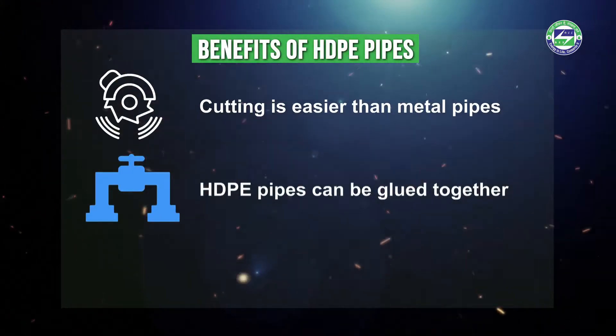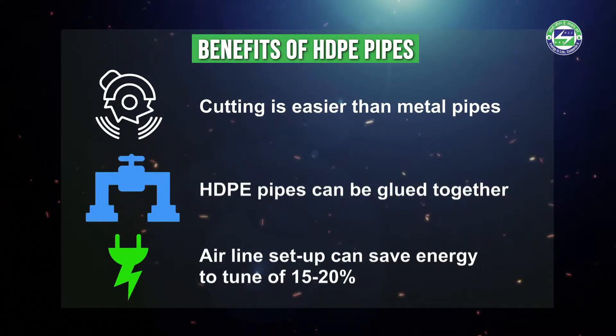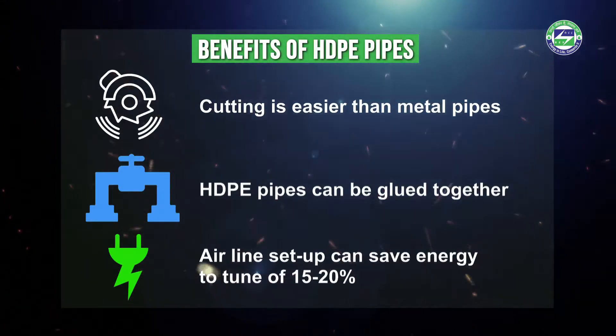An energy efficient compressed air line setup can save energy to the tune of 15 to 20%. These composite pipes are maintenance free, helping to reduce air leakages. Once leakage is reduced, power is indirectly saved as well. Suppliers claim the life of these pipes is almost 60 years.